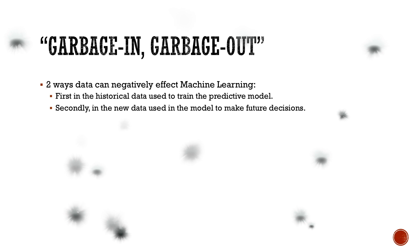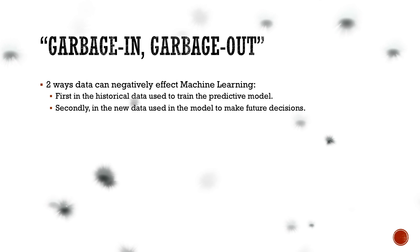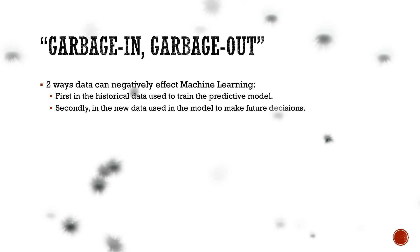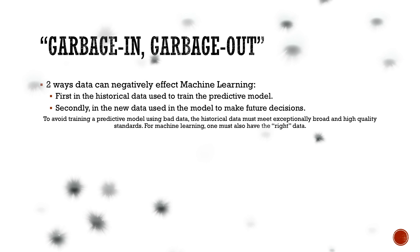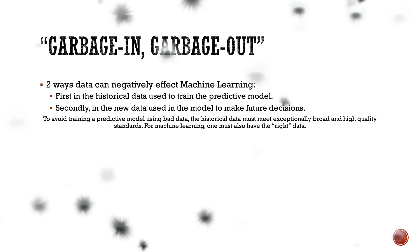First, we start with the bad. It has been a saying I have heard and used many times as a quality data analyst: garbage in, garbage out. As stated in the article, if your data is bad, your machine learning tools are useless by Thomas Redman, poor data is the number one enemy when it comes to widespread and profitable use of machine learning. Bad data can negatively affect machine learning by affecting the historical data used to train the predictive model, which in turn affects new data in the model used to make future decisions. To avoid training a predictive model using bad data, the historical data must meet exceptionally broad and high quality standards.